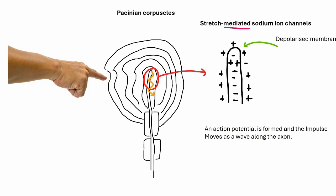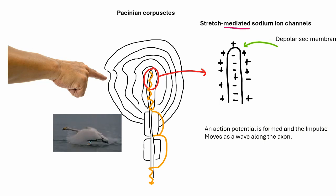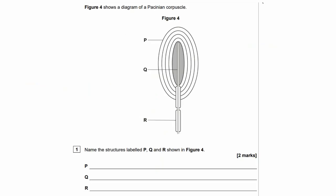The action potential moves by depolarizing each adjacent region of the axon's membrane. Once it reaches the myelin sheath or Schwann cells, it moves by saltatory conduction, jumping between the nodes of Ranvier, the unmyelinated regions of the axon. The myelinated regions allow a faster transmission of the action potential.